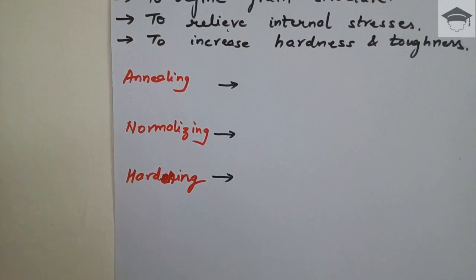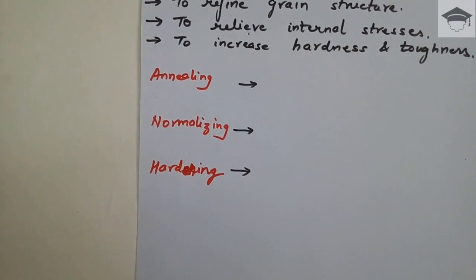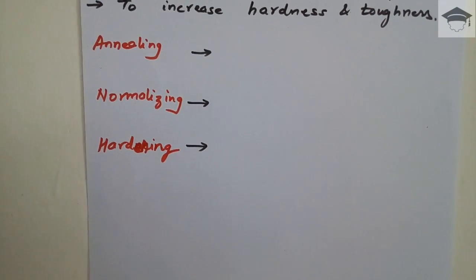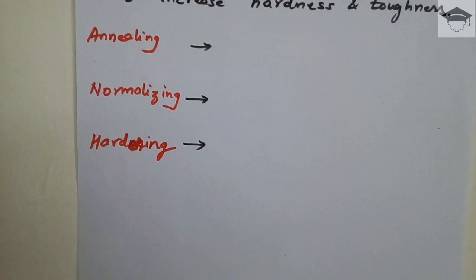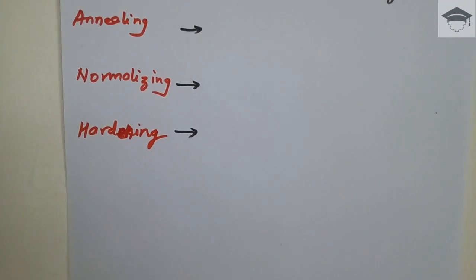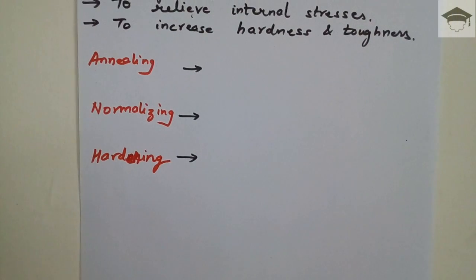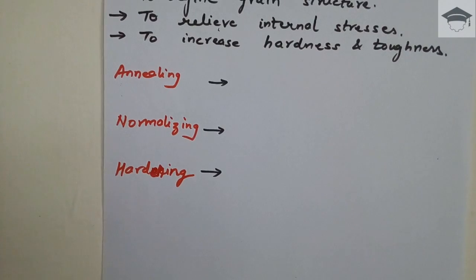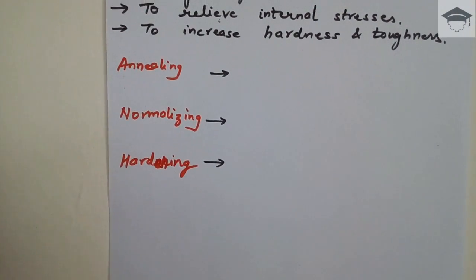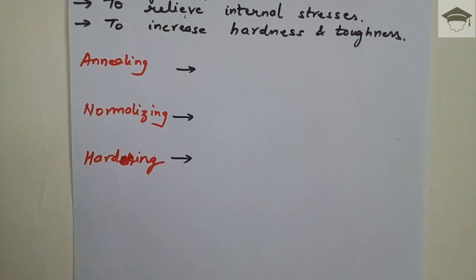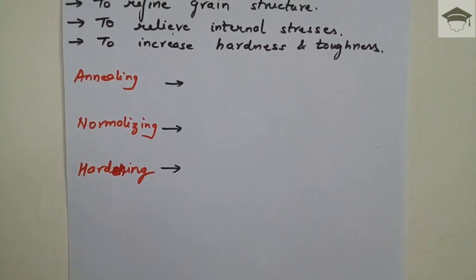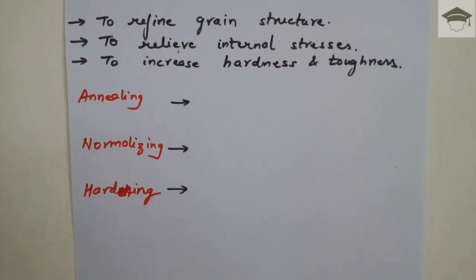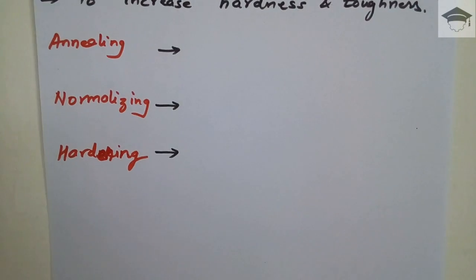In quenching, the component is first heated below the recrystallization temperature and then immersed in a quenching medium — such as water, brine solution (water plus NaCl), or oil. This produces a very hard component. The resulting microstructure is martensite, which is the toughest and hardest form of carbon steel structure obtained after the hardening process.